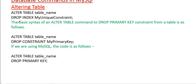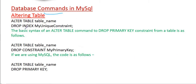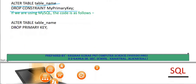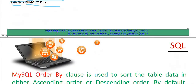Related to altering a table, to drop an index: DROP INDEX my_unique_constraint. To drop a PRIMARY KEY constraint — if you want to remove the primary key: ALTER TABLE [table_name] DROP CONSTRAINT my_primary_key, or ALTER TABLE [table_name] DROP PRIMARY KEY.